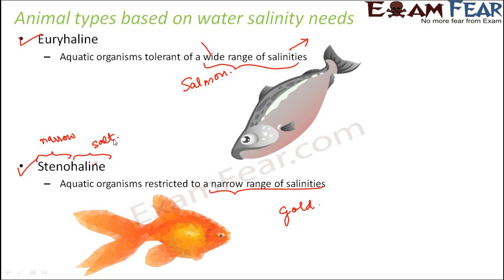Different types of organisms have different needs for their survival. Some can survive in more saline water as well as less saline water, while some can survive only in a specific type of water salinity. Similarly with temperature, some can survive only in regions with high temperatures and some only in regions with low temperatures. The needs of different organisms are completely different from each other.